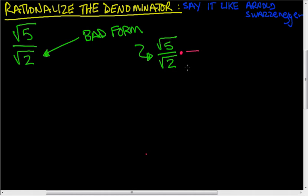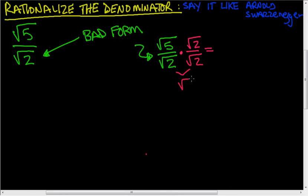We can pick a lot of things, but the best thing is to pick the denominator itself. So we multiply by the square root of 2 over the square root of 2. This is okay to multiply by because the square root of 2 over the square root of 2 is just 1 — we're not really changing anything. On the denominator, the square root of 2 times the square root of 2 is the square root of 4, which is just 2. By multiplying by this, the square root goes away. On the top, the square root of 5 times the square root of 2 makes the square root of 10.